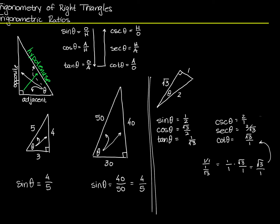These are actually called identities — specifically, the reciprocal identities. The sine of theta equals 1 over cosecant of theta, cosine of theta equals 1 over secant, and tangent of theta equals 1 over cotangent. Those are called the reciprocal identities.